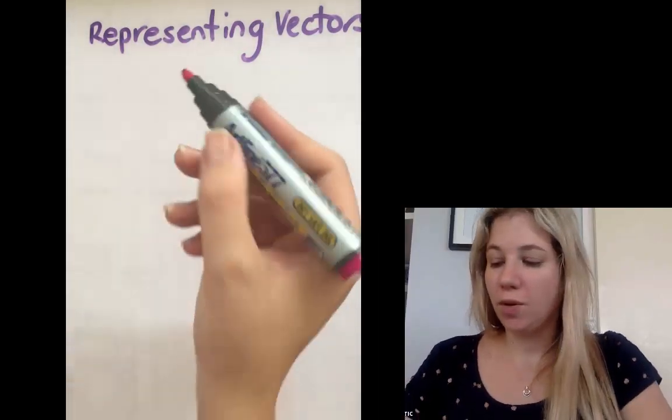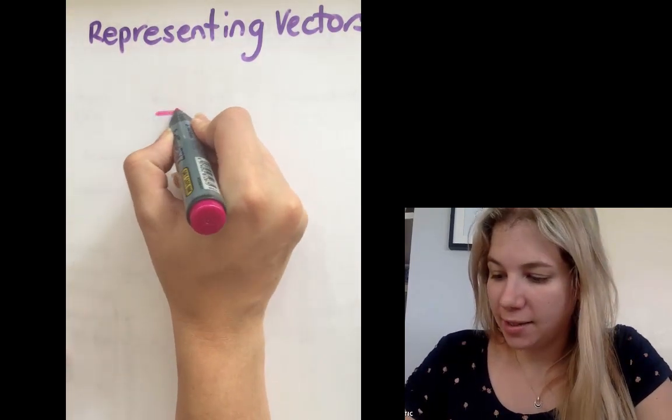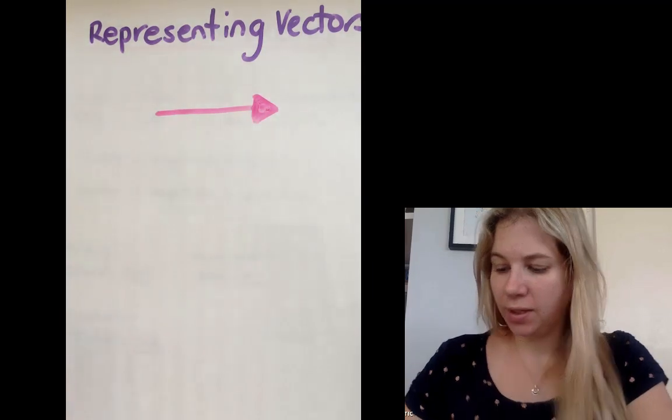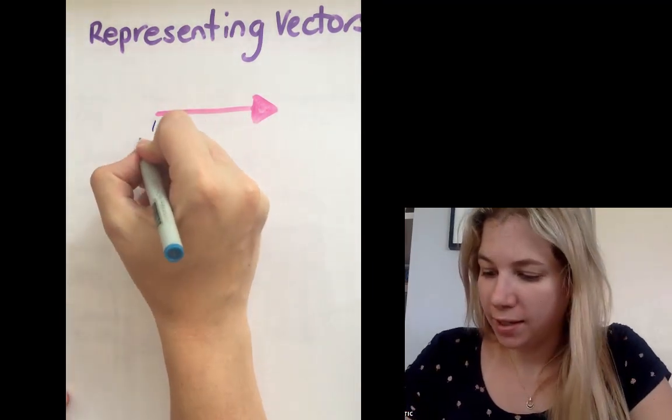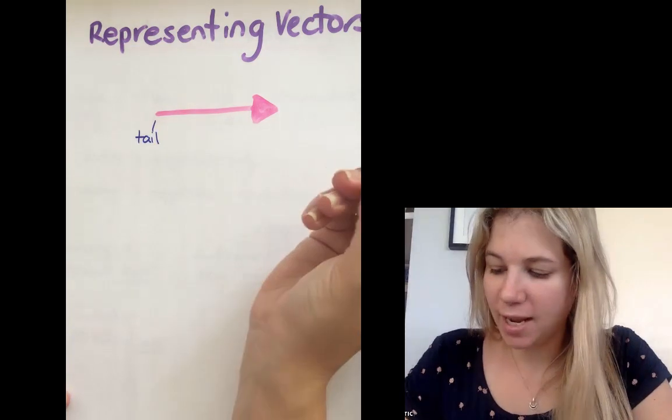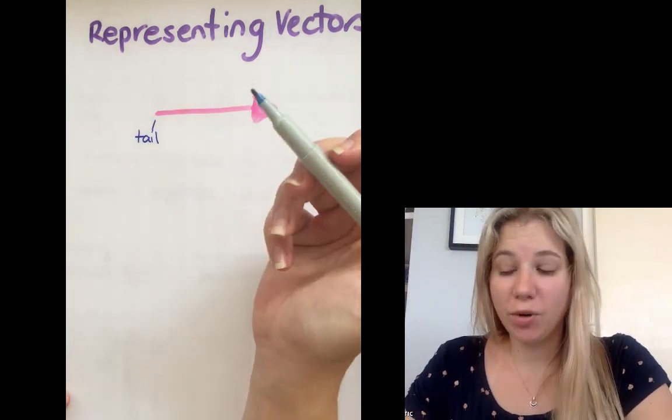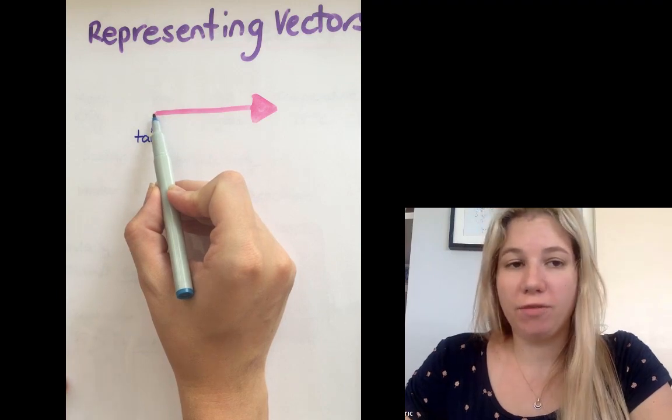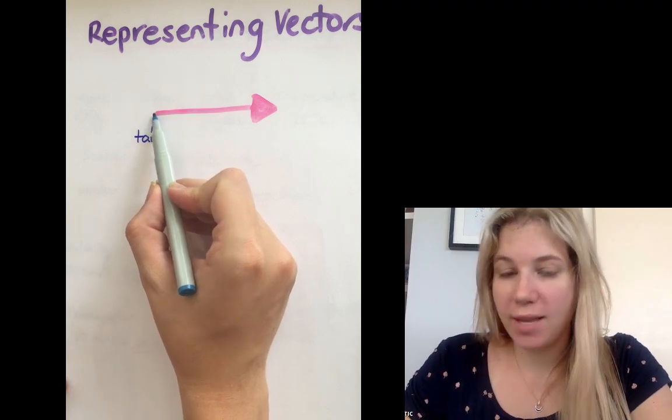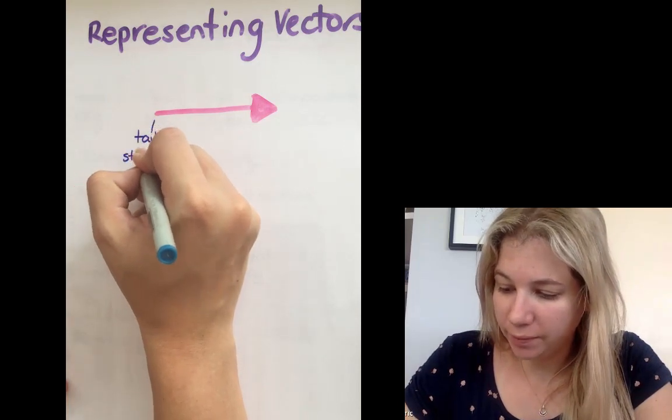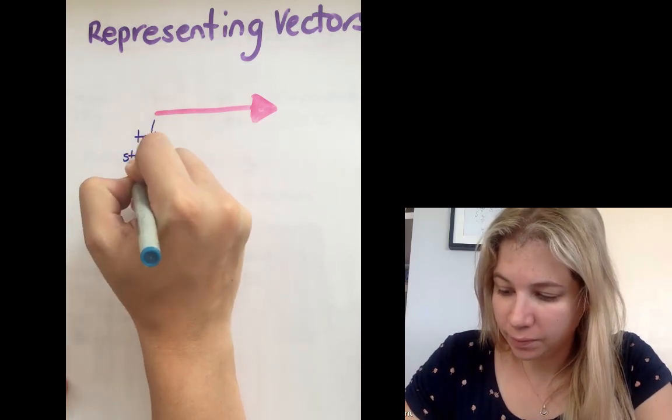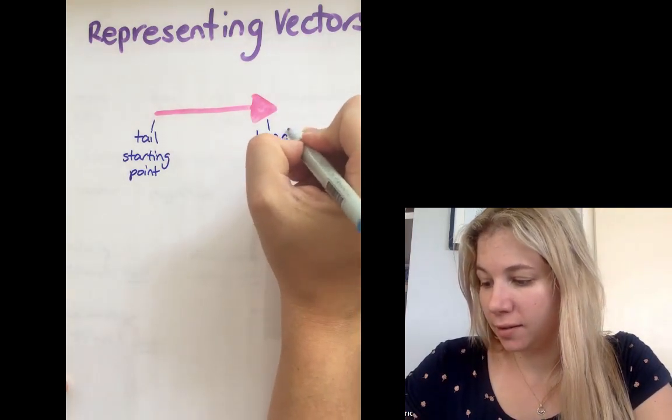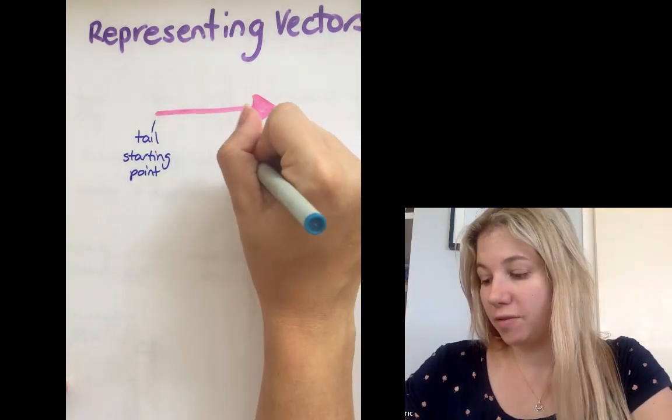When we're representing vectors, we use an arrow and the arrow has a head and a tail. This part here of the arrow is the tail and we would say that the tail is our starting point. If this arrow was representing the displacement of somebody walking from home somewhere else, this would be where they started from home. And this is the head of the vector, the finishing point.